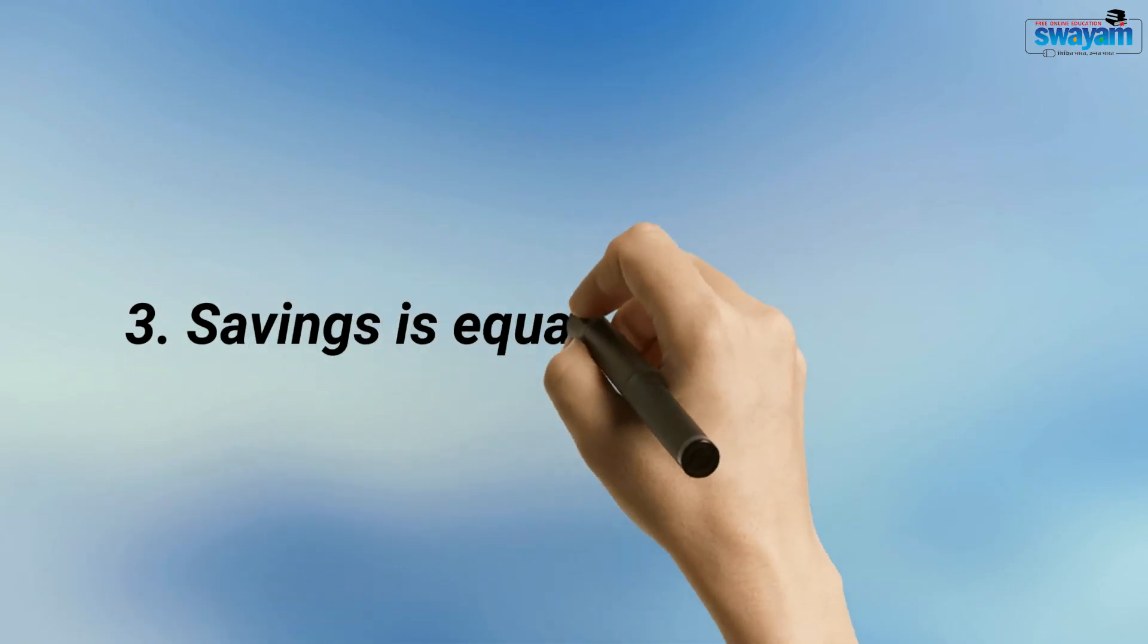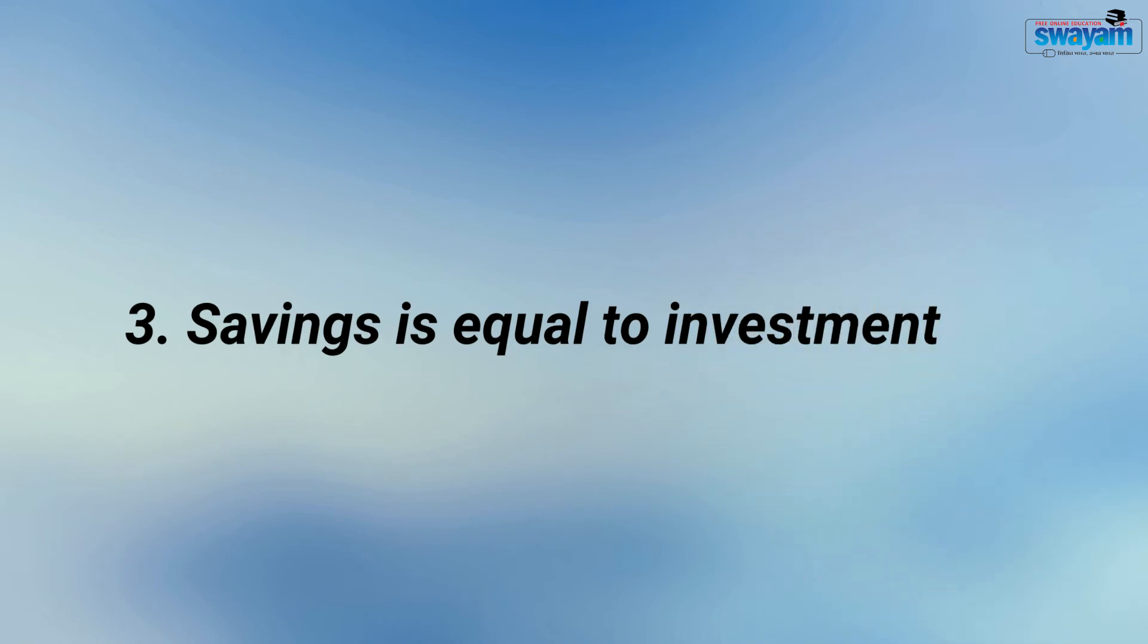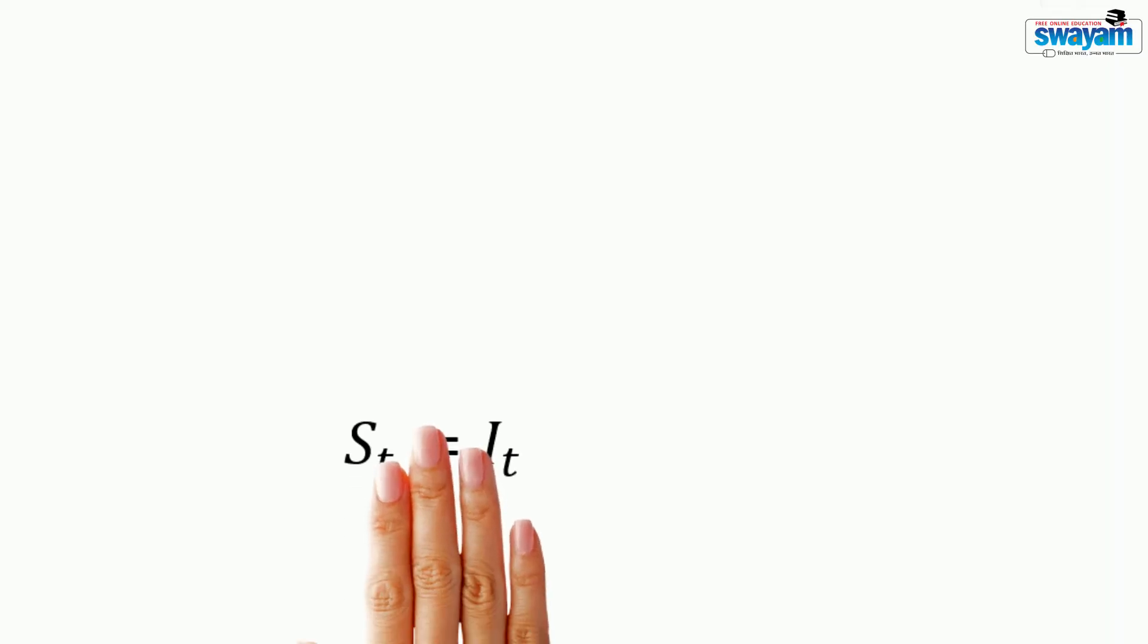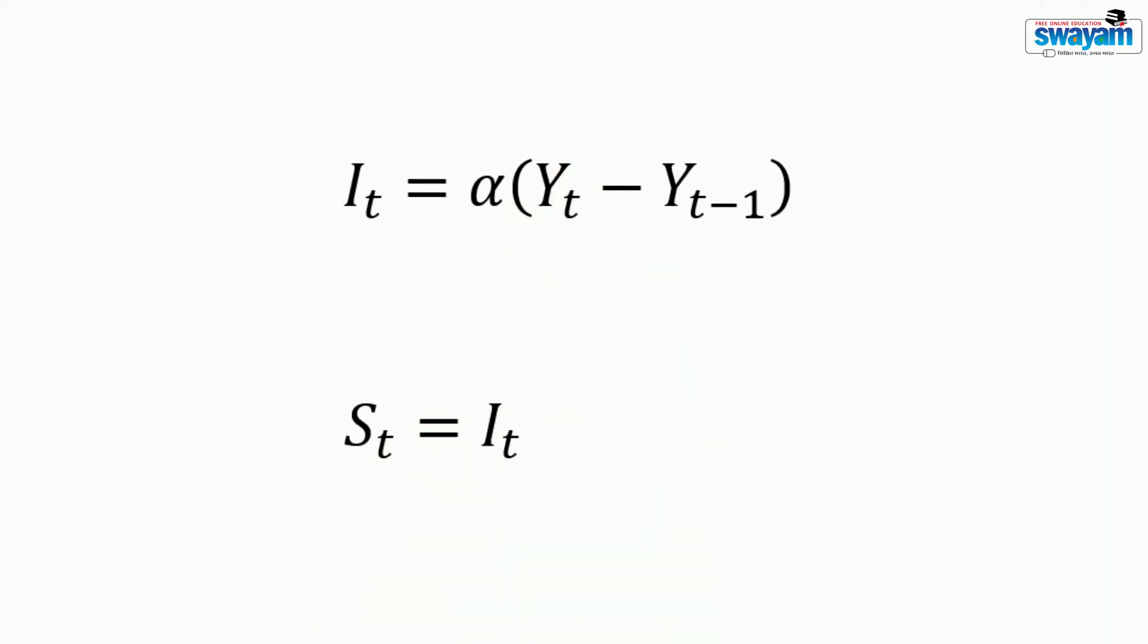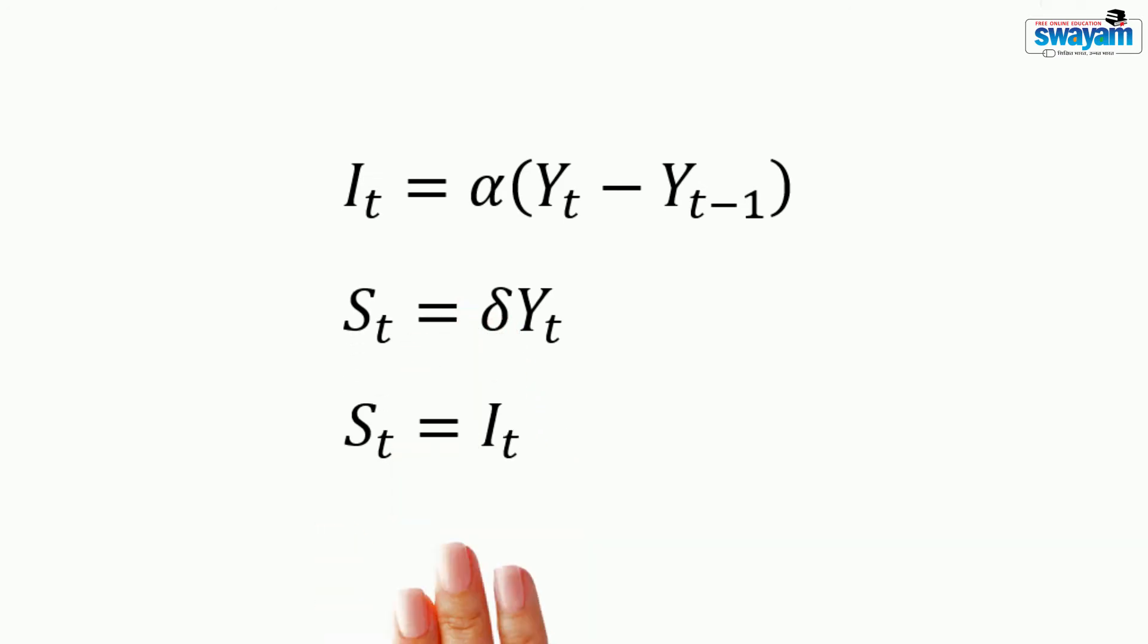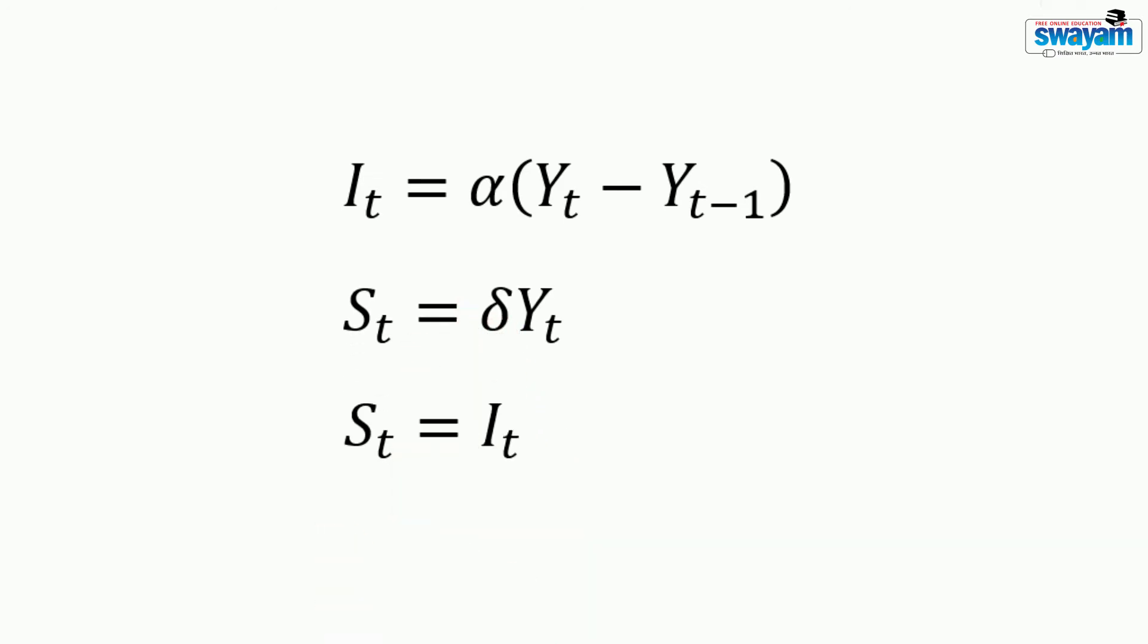The third assumption says that savings is equal to investment. This means that whatever is saved is invested. This equilibrium condition can be expressed like this. So, we have three equations from three assumptions.